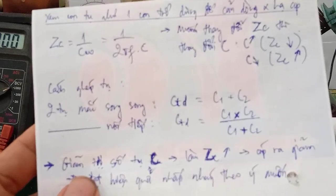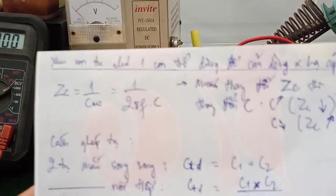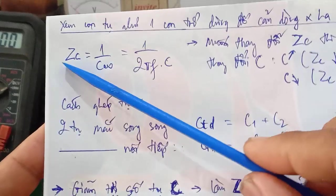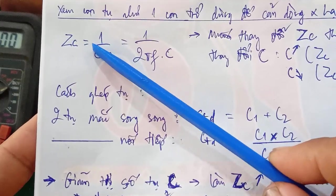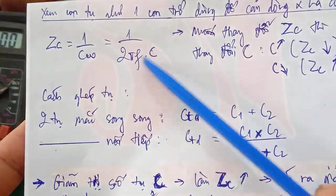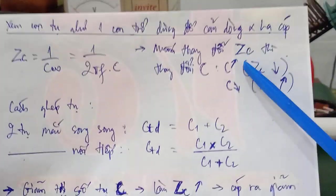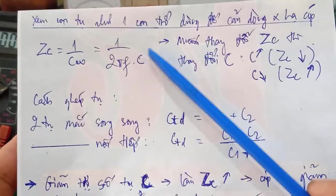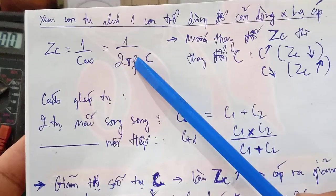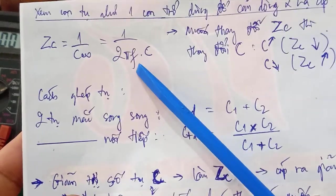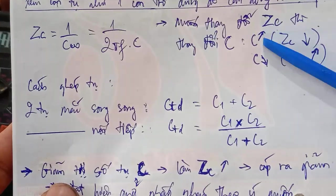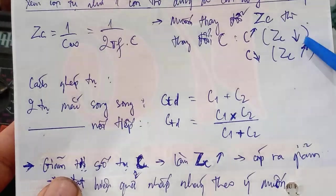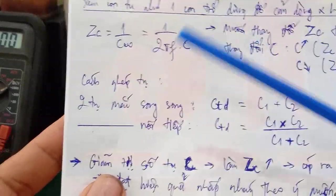We can view the capacitor as a component used to limit current and reduce voltage. Here we have Zc = 1/(ωC). This is capacitive reactance. Omega equals 2πf × C. To change Zc, we need to change capacitor C by increasing or decreasing its value. F is the frequency, which is 50Hz for the 220V electrical grid at 50Hz. Here we only change the C value to change Zc. When we increase C, Zc decreases, and when we decrease C, Zc increases because these two values are inversely proportional - one increases, the other decreases.